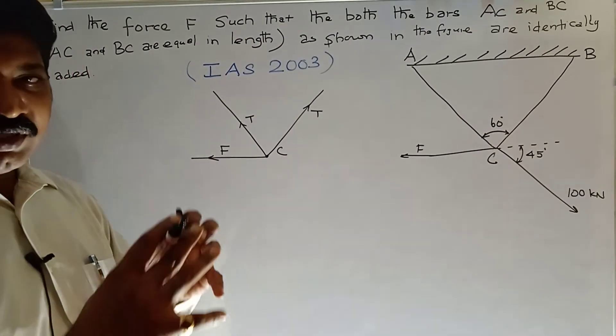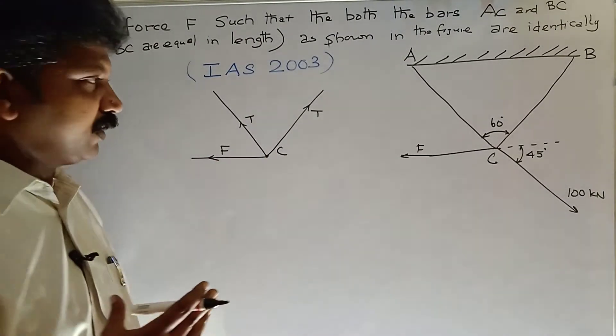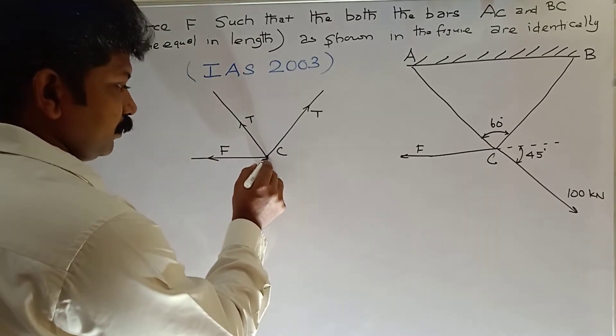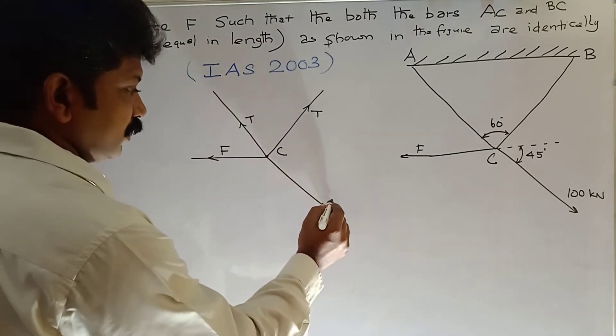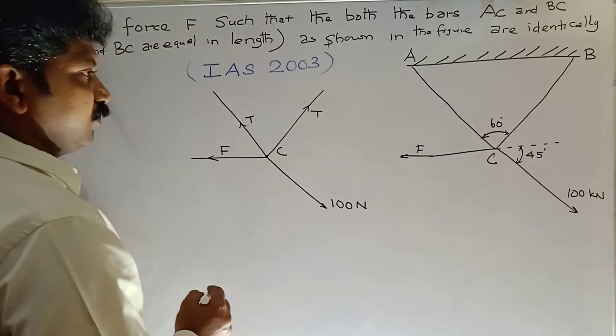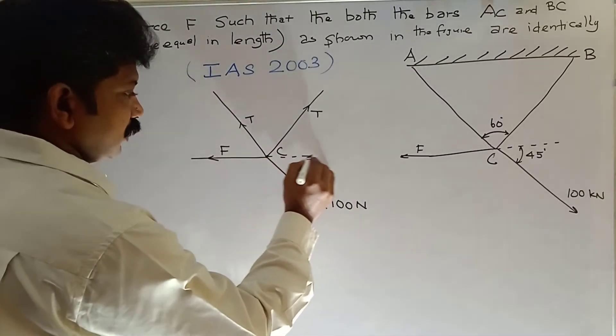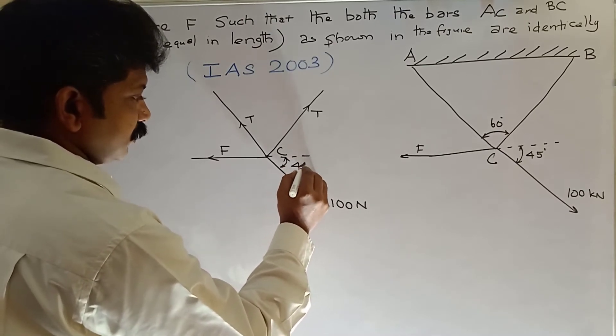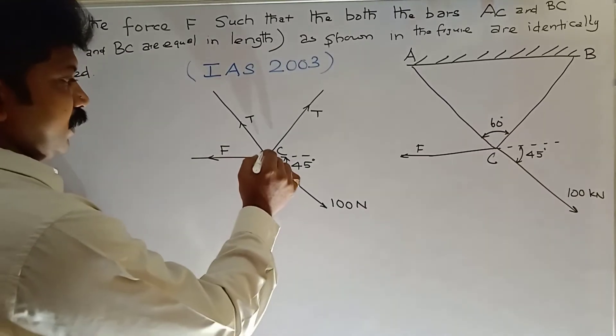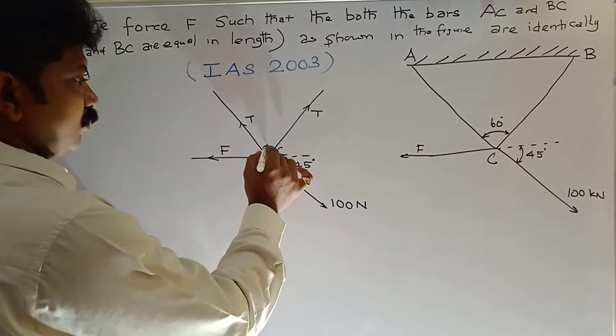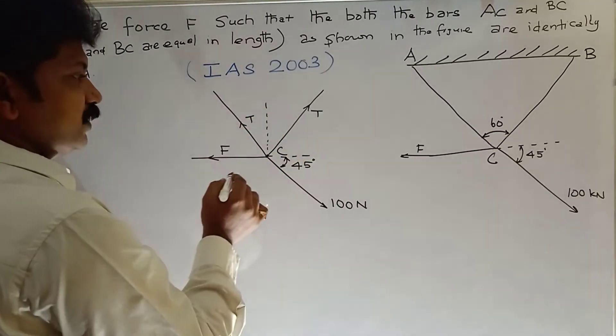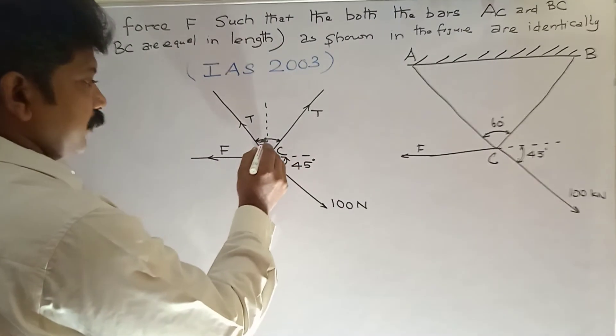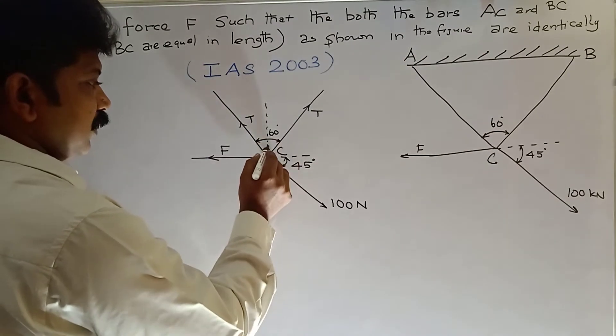Isolated from the surrounding and represent all the forces acting on it. So at point C, mention all the forces: inclination 45 degrees, 100 kN, 60 degrees. Both AC and BC are equal, so 60 degrees divided equally, 30 degrees both sides.